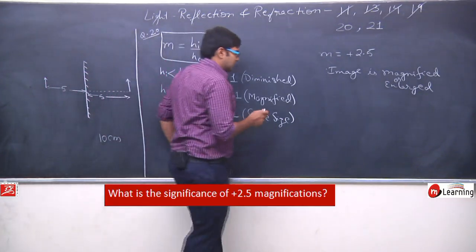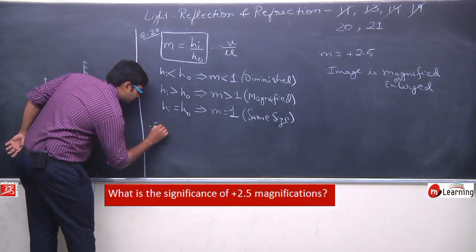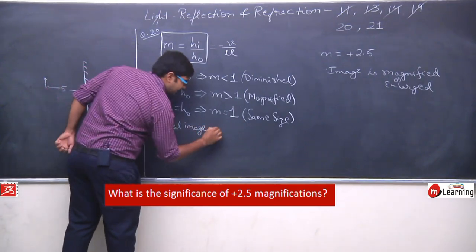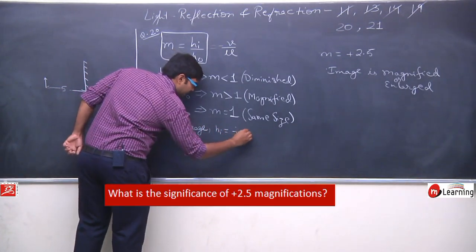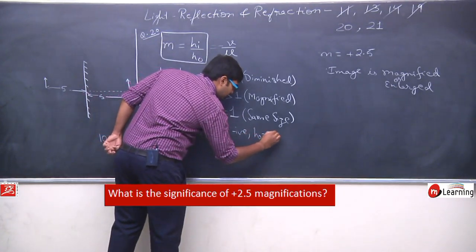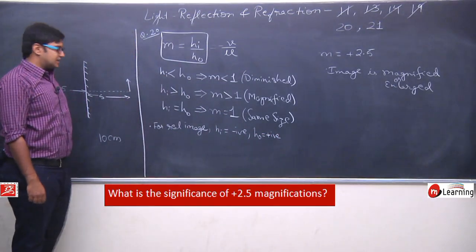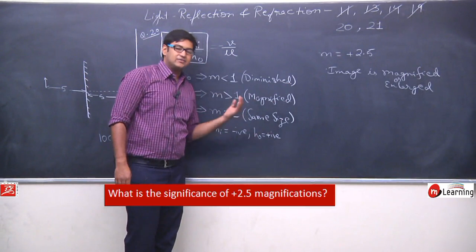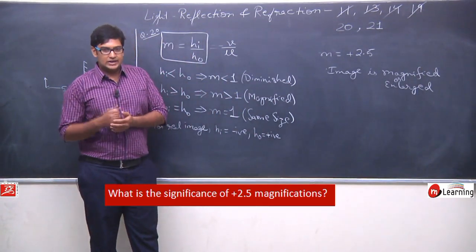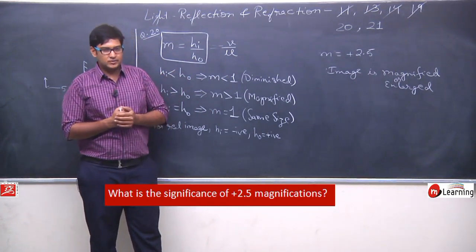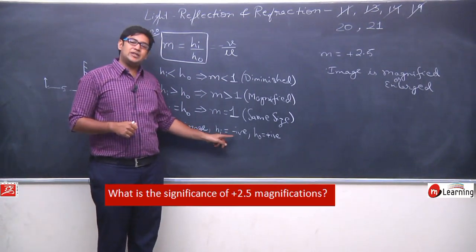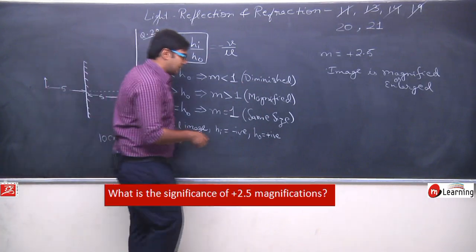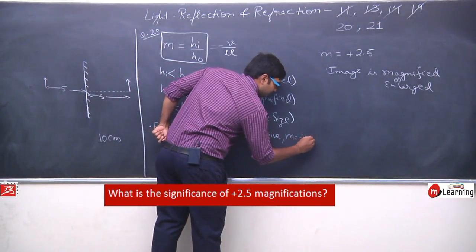We can write a simple conclusion: for a real image, height of image is negative and height of object is positive. You can understand this easily from the ray diagram sketches of image formation that we drew earlier. If height of image is negative and height of object is positive, then when we put these into the formula, magnification will be negative.